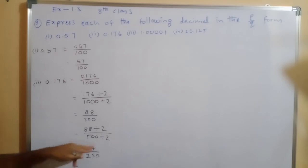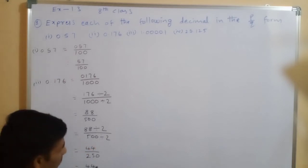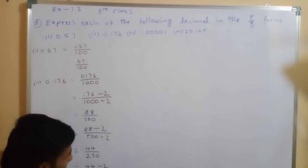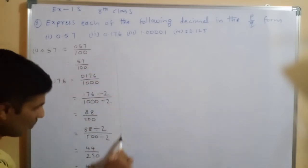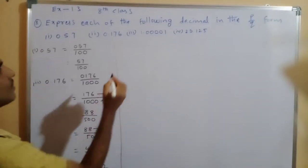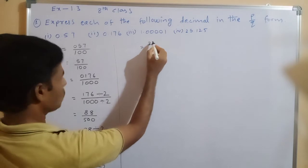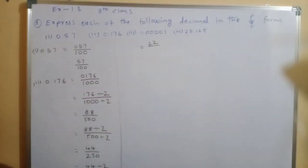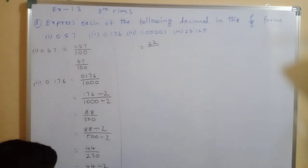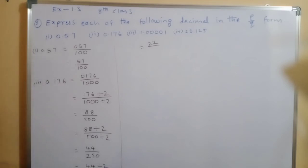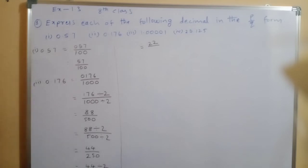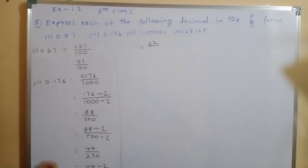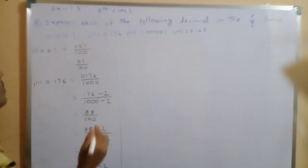Again divide both by 2: 44 divided by 2 gives 22, and 250 divided by 2 gives 125. So p equals 22 and q equals 125. Therefore 0.176 equals 22 by 125.